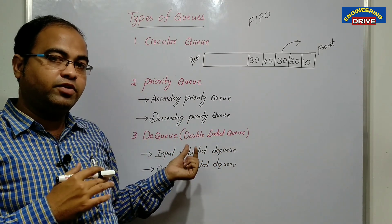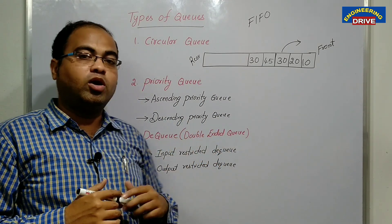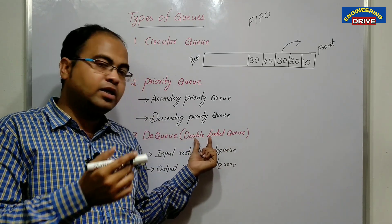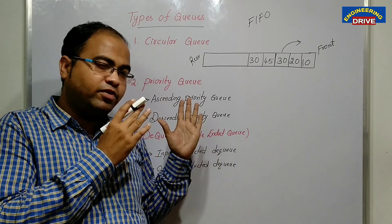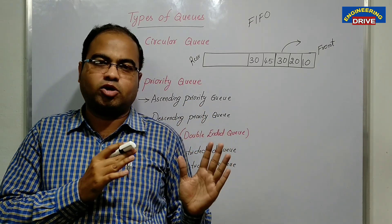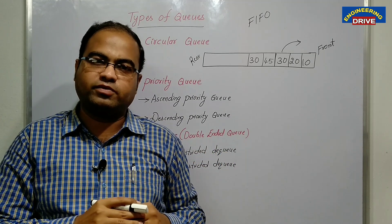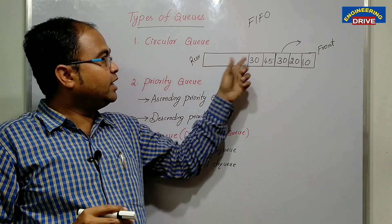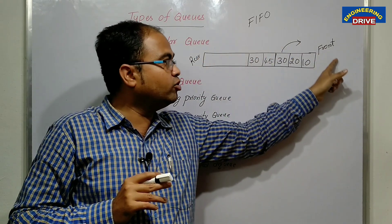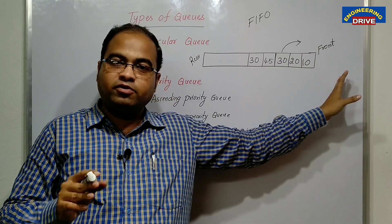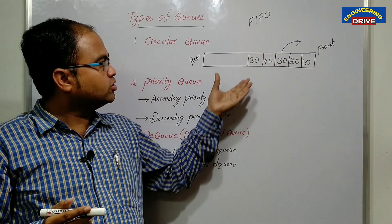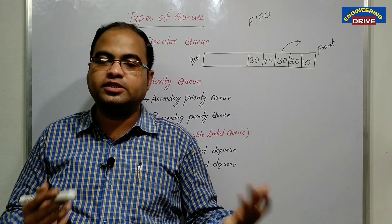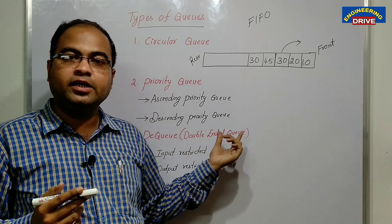The most important one is the DQ, or double ended queue. In a normal queue, we insert elements only from rear and delete elements only from front. But in a double ended queue, we can use both ends. A queue which can make use of both ends for insertion and deletion is known as a double ended queue.